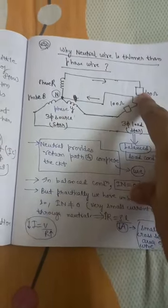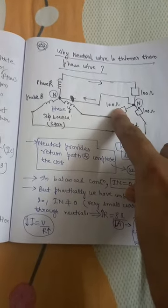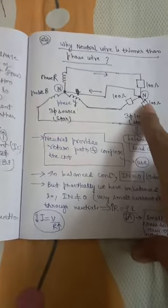In unbalanced load condition we don't have equal impedance in all the three phases, so in unbalanced condition we have some current flowing through the neutral.